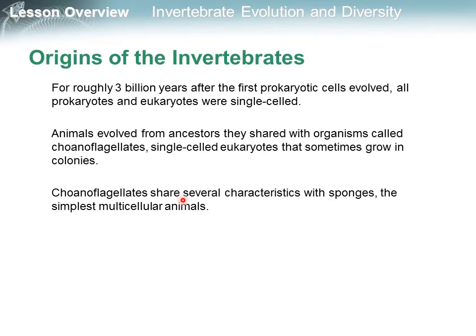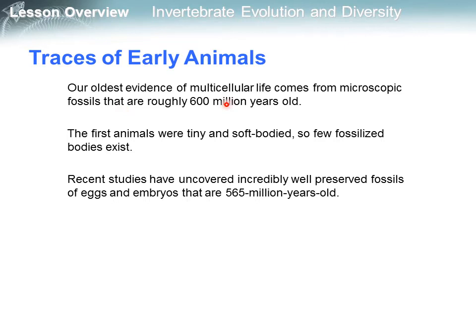Choanoflagellates share several characteristics with sponges, the simplest multicellular animals. Our oldest evidence of multicellular life comes from microscopic fossils that are roughly 600 million years old. The first animals were tiny and soft-bodied, so few fossilized bodies exist. Recent studies have uncovered incredibly well-preserved fossils of eggs and embryos that are 565 million years old.